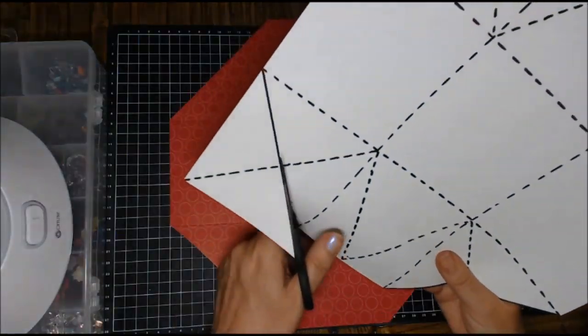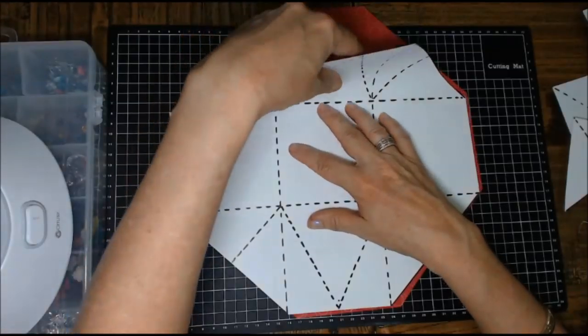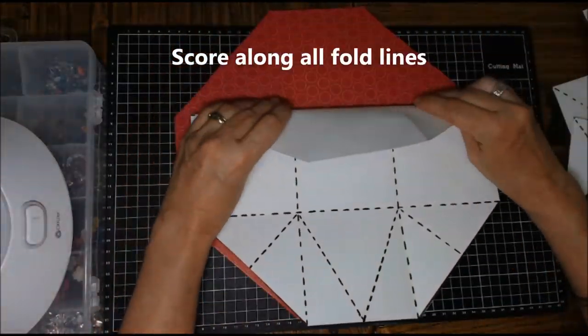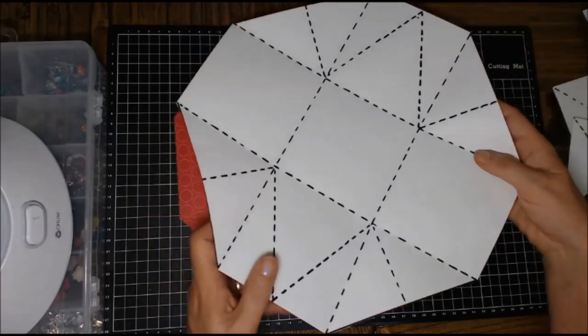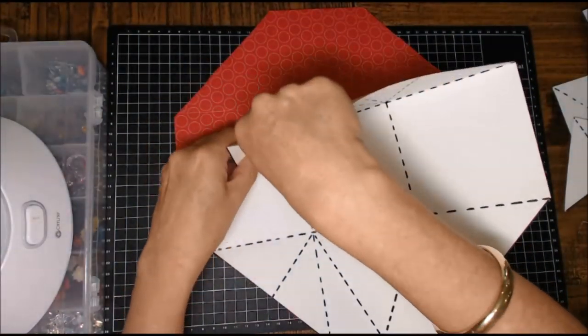Now I'm going to do the same on the template, which is just so much easier for you to see than using this red piece. So you're going to fold all the score lines. That's all the cutting you need to do. It's pretty simple with the cutting. It's just the folding that's a little complicated but I'll take you through it step by step.